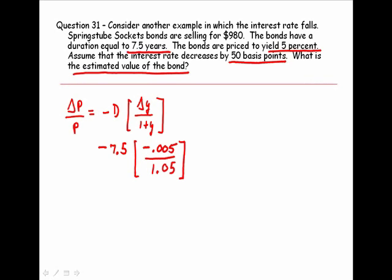When we multiply a negative times a negative, we're going to get a positive value, aren't we? And so we get positive 0.0357. So if the yield falls from 5% to 4.5%, we would estimate that the bond is going to increase in value by 3.57%. The question says, what is the estimated value of the bond?